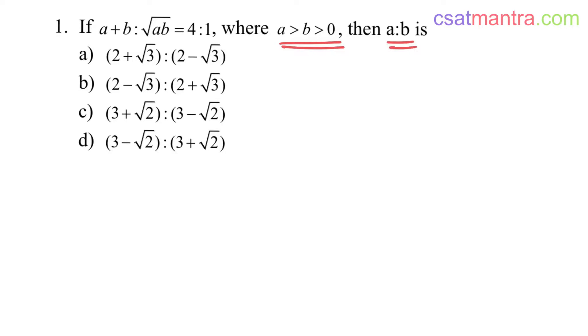We are asked to find A to B, given A is greater than B. Now just eliminate the options which have A less than B.